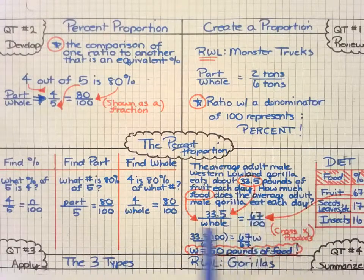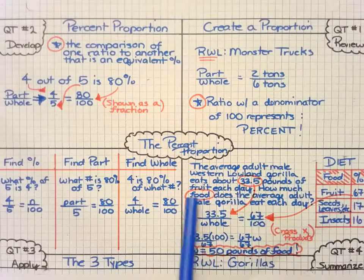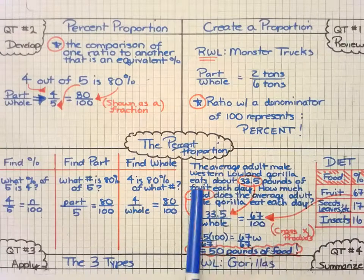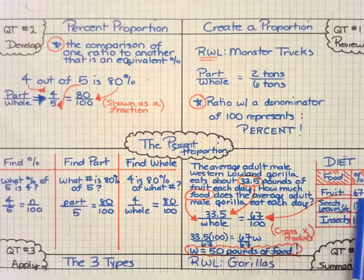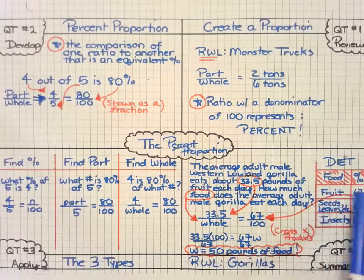Well, how do I set that up? First of all, identify some of the key parts of my word problem. I see that there are 33.5 pounds of fruit. But if I look over here in this chart, I see that fruit only makes up 67 percent. So that's not a total, that's a part.